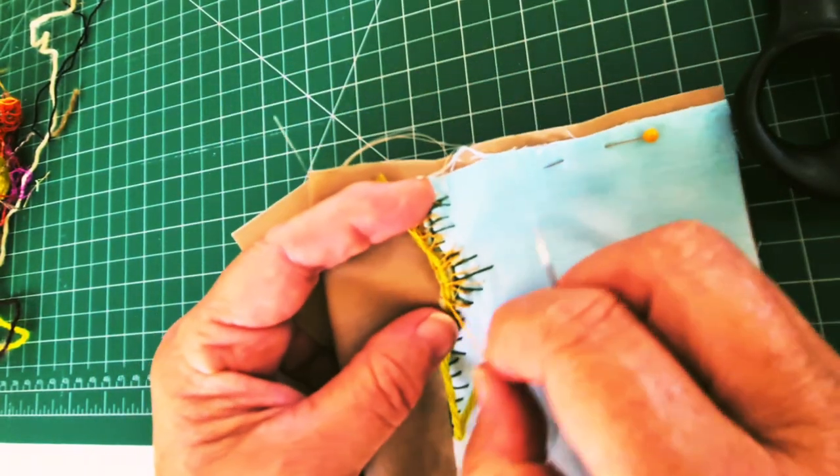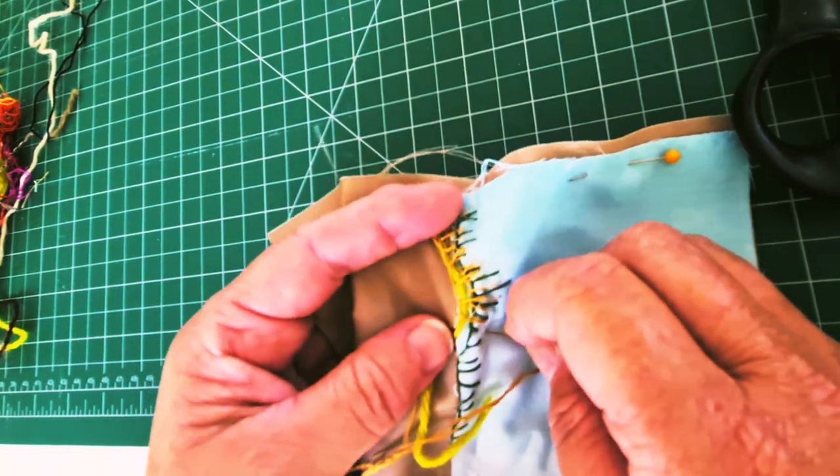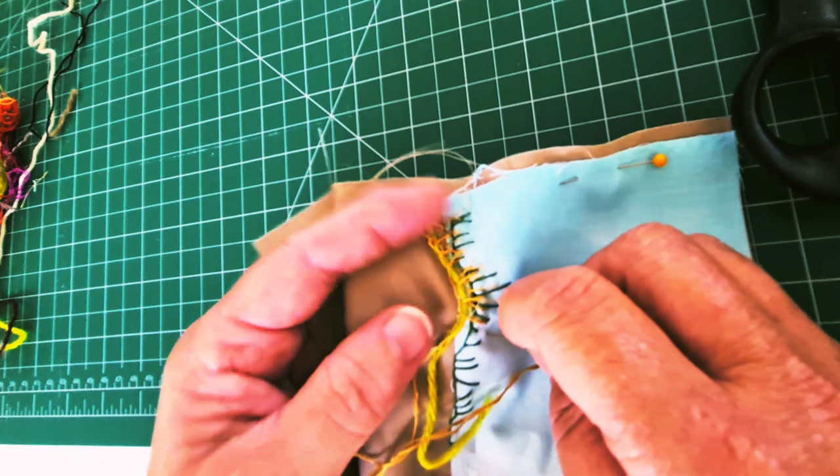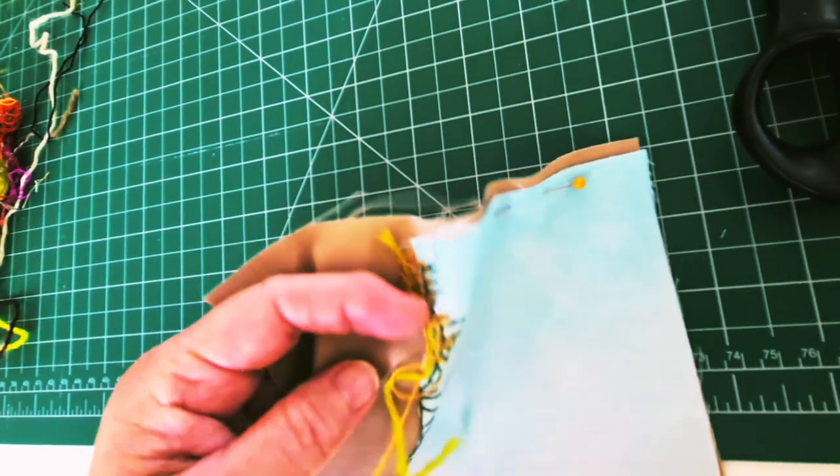So I'm just continuing that on a little ways, just adding to this grassy hill kind of shape that we've got going on, and then we'll have a go at something a little bit different.